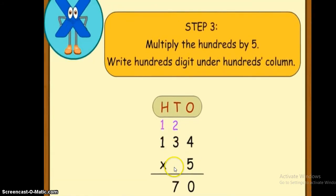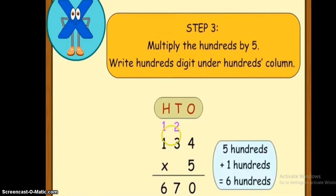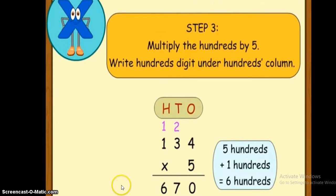We will write seven under the tens column and carry over the one above the hundreds. Then we are going to multiply five by the hundreds. The hundreds here is 1, so five times one equals five, plus one it will become six. So the product of 134 by five is 670.